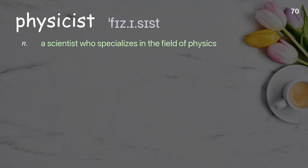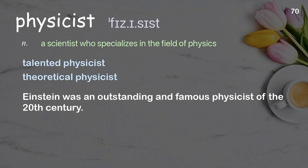Physicist: a scientist who specializes in the field of physics. Examples: talented physicist, theoretical physicist. Einstein was an outstanding and famous physicist of the 20th century.